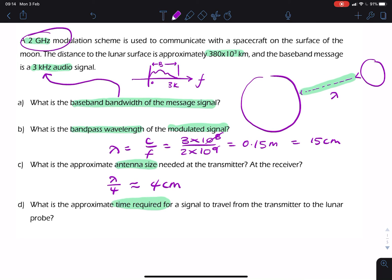To find the time, you simply divide the distance by the speed. So, you have 380 times 10 to the power of 3. And it says kilometers. So, you're multiplying by 10 to the power of 3 again to convert to meters. 3 times 10 to the power of 8. And the answer is 1.2 seconds. So, that's your final answer.